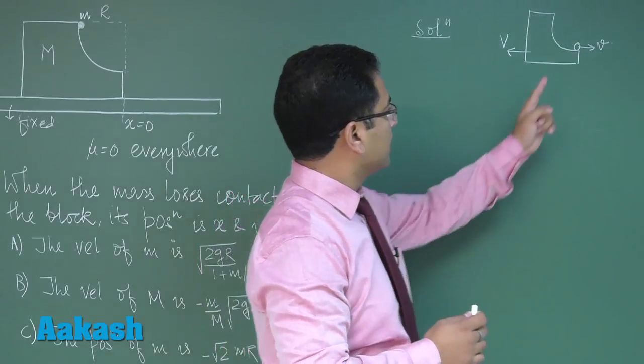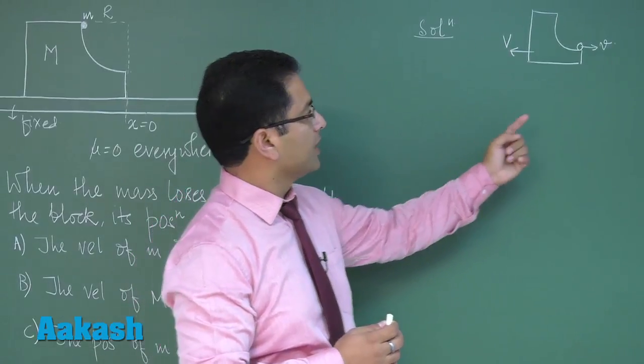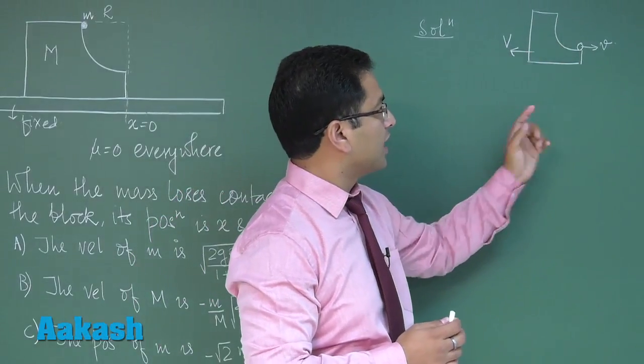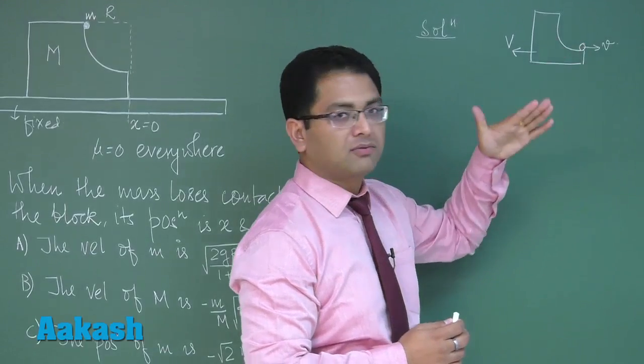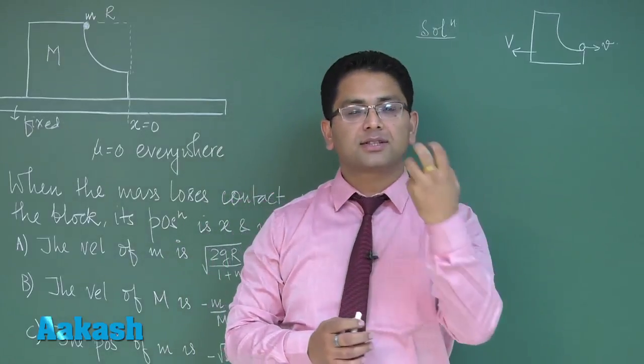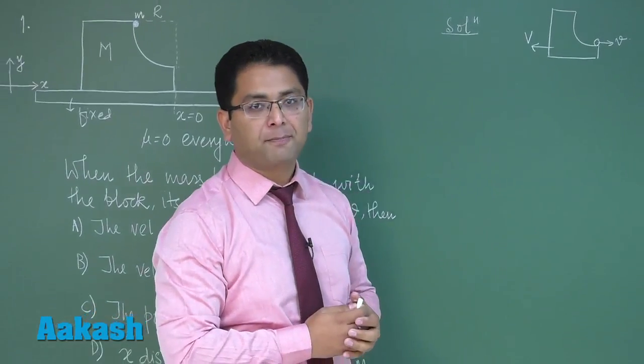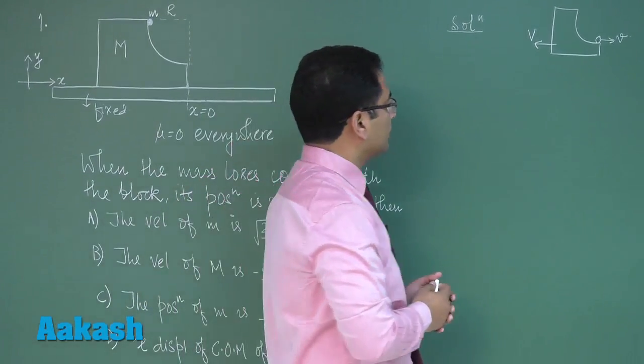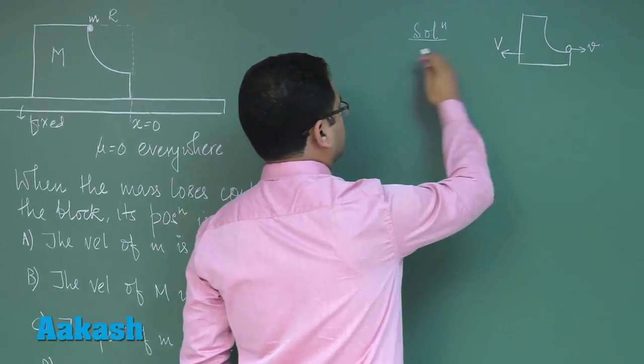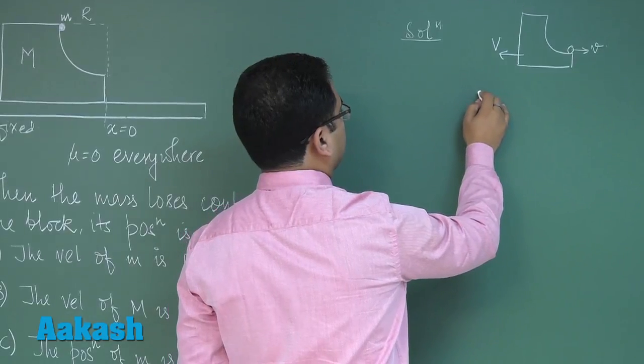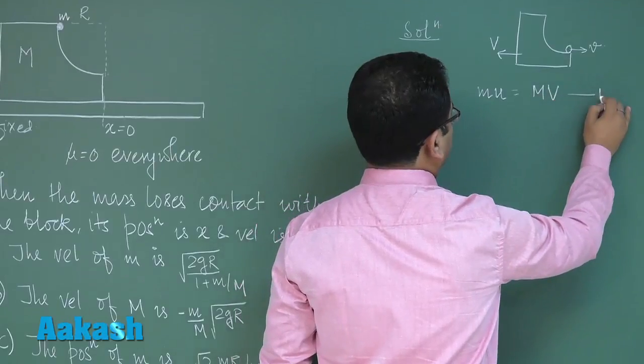However fortunately both the velocities are along x direction and if you see the free body diagram mg and capital Mg along y-axis, the normal reaction between the small particle and the block would cancel out eventually helping us to conclude that there is no external force along x direction. So I can easily conserve linear momentum and this would be taken as the positive direction, this would be taken as negative. So applying conservation of linear momentum I get this equals to this, that is equation number one.